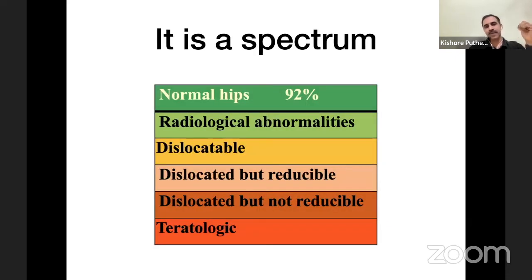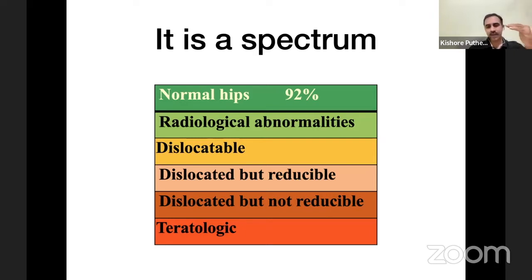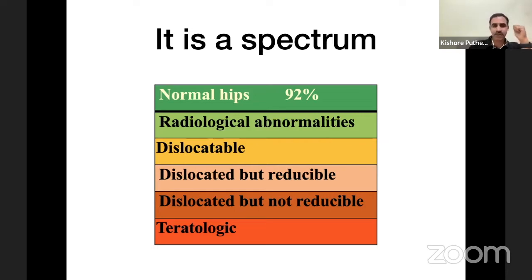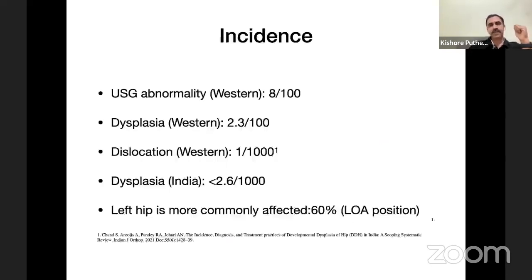What is the spectrum? The spectrum ranges from a normal hip to a teratologic hip. Teratologic means the hip is dislocated in utero, associated with some neurologic or neuromuscular conditions. In between, we have a hip with radiological abnormalities, a dislocatable hip, a dislocated but reducible hip, and a dislocated but non-reducible hip.